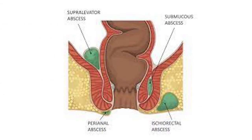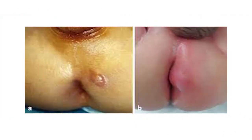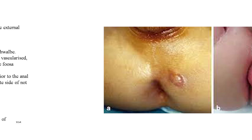Here is another image showing the perianal abscess, ischio-rectal abscess, supraelevator abscess, and submucosal abscess, with the green color highlighting the various types of abscesses. This is a typical anorectal abscess showing redness, inflammation, and throbbing pain.